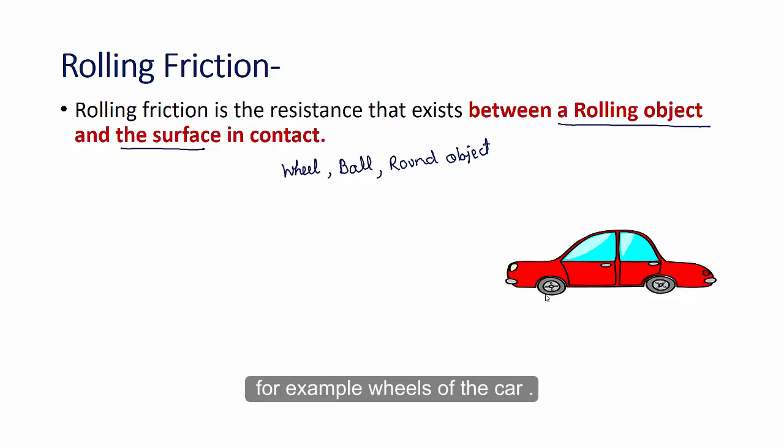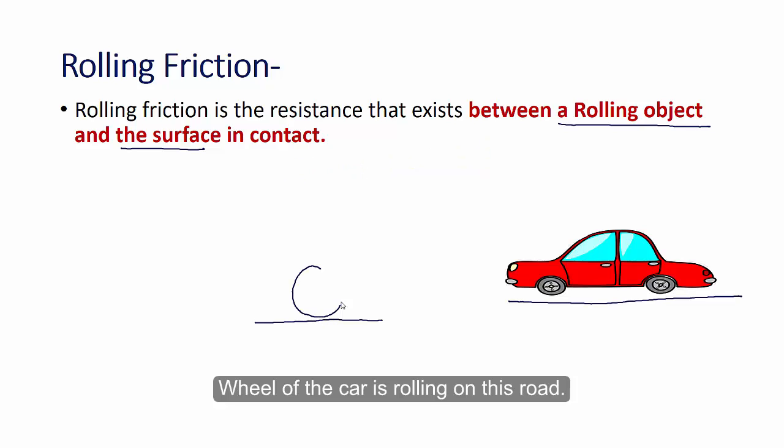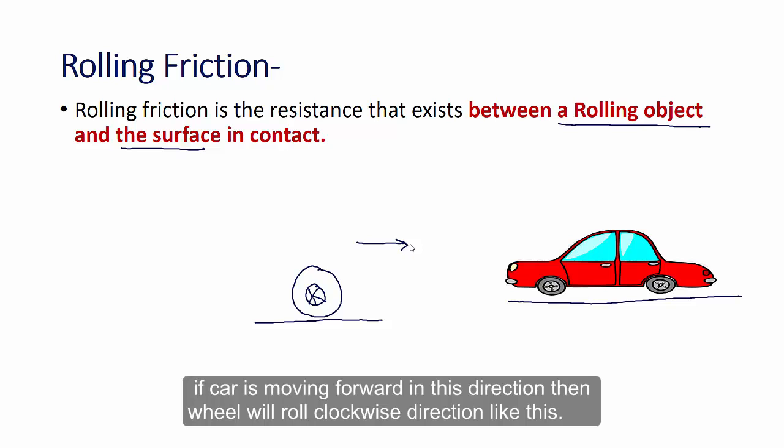For example wheels of the car. So here is the wheels. Wheels of the car are rolling on this road. If car is moving forward in this direction, then wheel will roll clockwise direction like this.